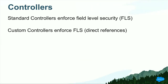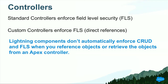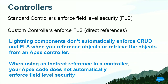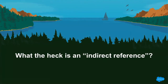Let's first talk about controllers, because controllers are typically how you get access to data. Standard controllers always do what you expect — they enforce security, including field level security. Custom controllers do the same via direct reference. Lightning components don't automatically enforce CRUD and FLS when you reference or retrieve objects from an Apex controller, so for Lightning components retrieving data via an Apex controller, you'll need to use techniques to ensure you enforce security. Likewise, when using an indirect reference in a controller, your Apex code does not enforce field level security — so you could write Apex that completely ignores FLS and risk leaking data.